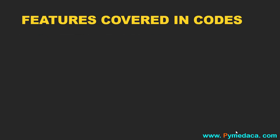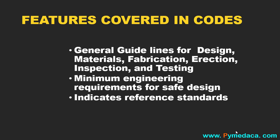Let us see what code actually covers. Code generally specifies the general guidelines for design, materials, fabrication, erection, inspection, and testing. It also covers the minimum engineering requirements for safe design — code mentions only the minimum engineering requirements to be met. It also indicates the reference standards to be verified, so that in case of fittings and materials, we can refer to particular standards that are covered in the codes.